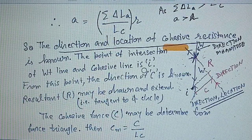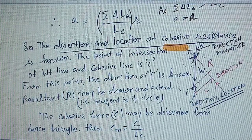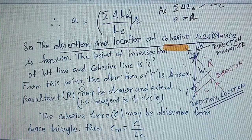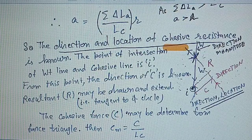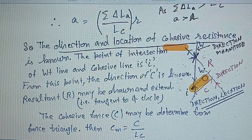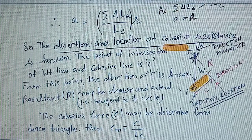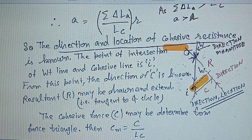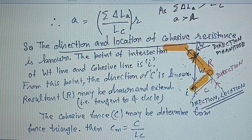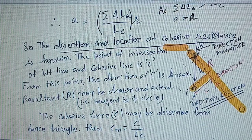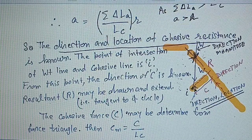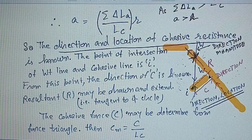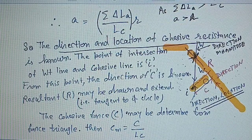As shown in the figure, the point of intersection of the weight line and the cohesive line is point I. From this point, the direction of C is known. For reaction R, the reaction R may be drawn and extended, which is tangential to the phi circle. The intersection of the cohesive line and the reaction line allows us to determine the magnitude of cohesion C.